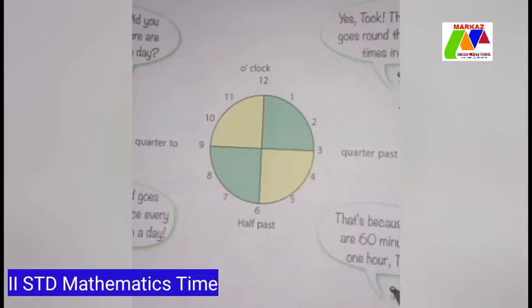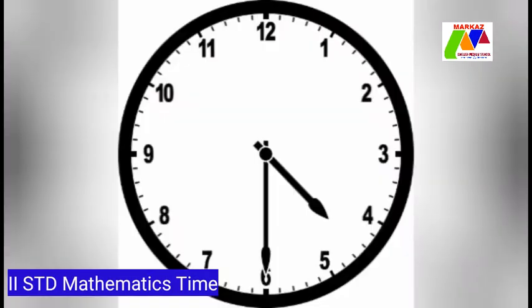Children, now let us learn how to read half past, quarter past and quarter to. Here is a clock picture. It shows the minute hand on 6 and the hour hand between 4 and 5. This can be read as 4:30 or half past 4. We can write it as 4.30.